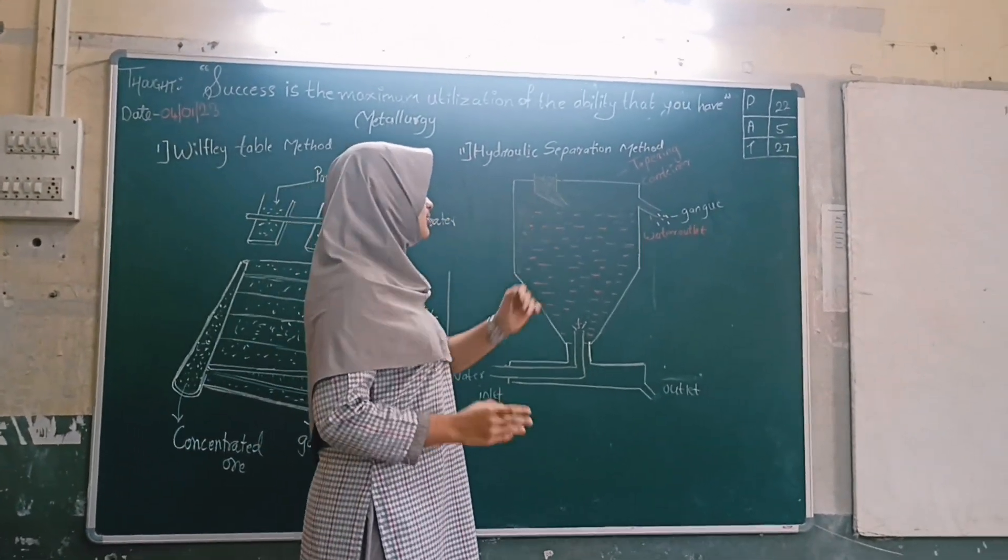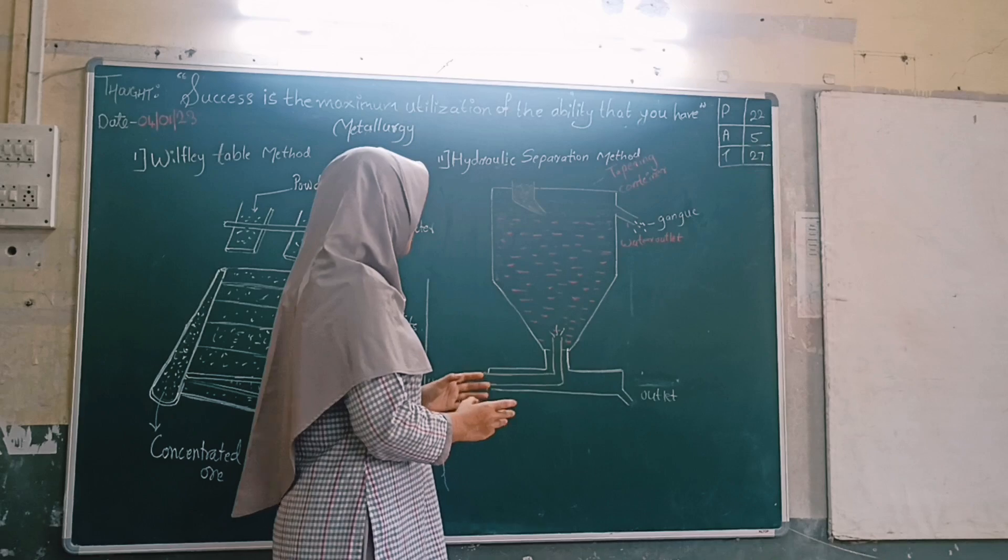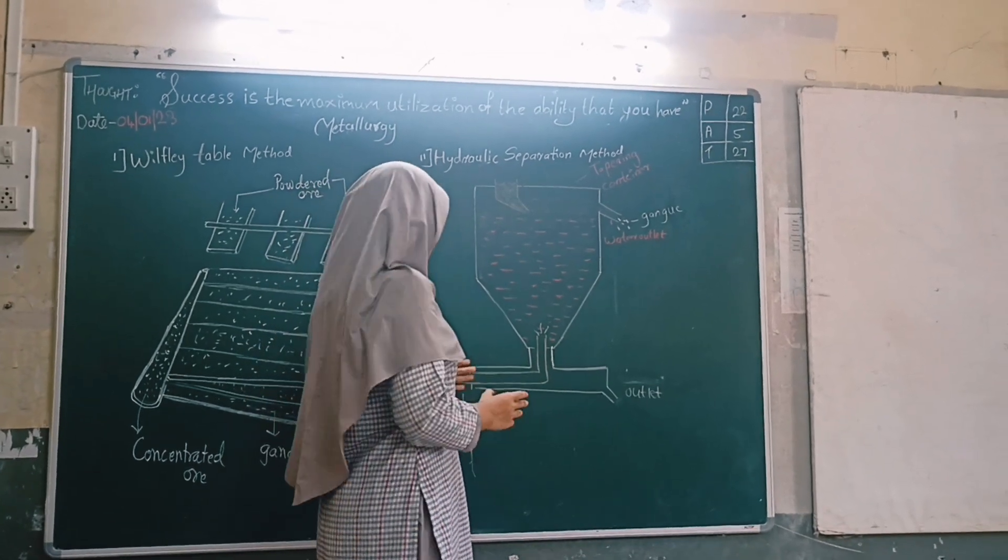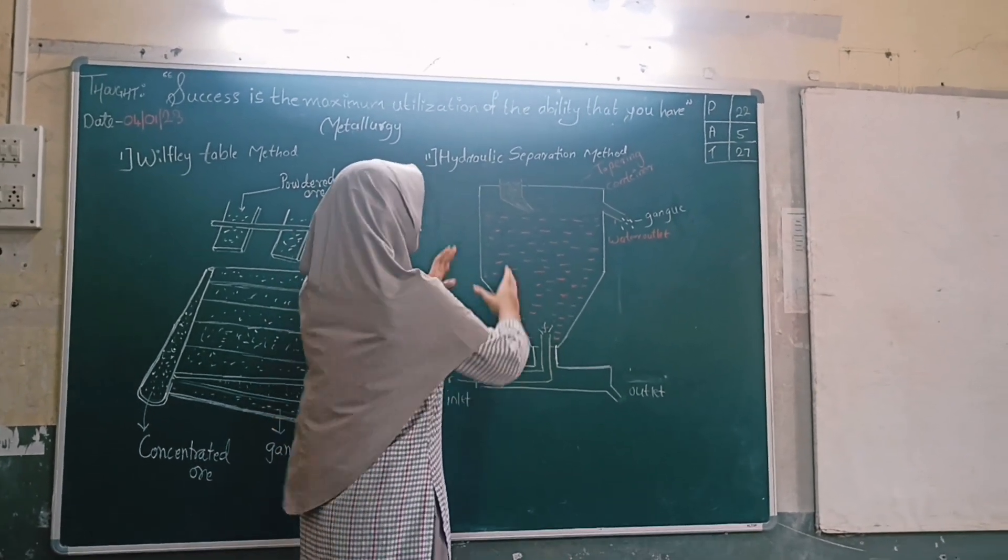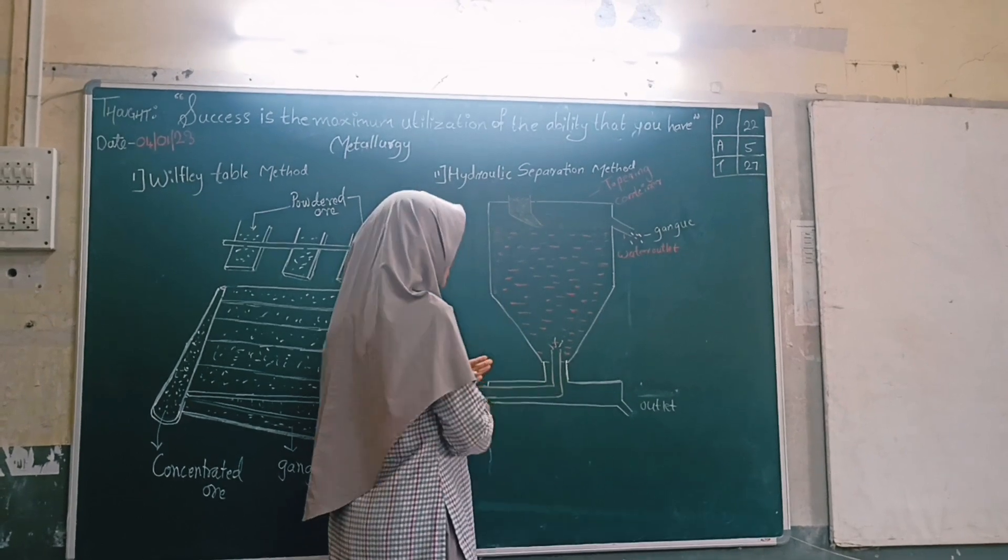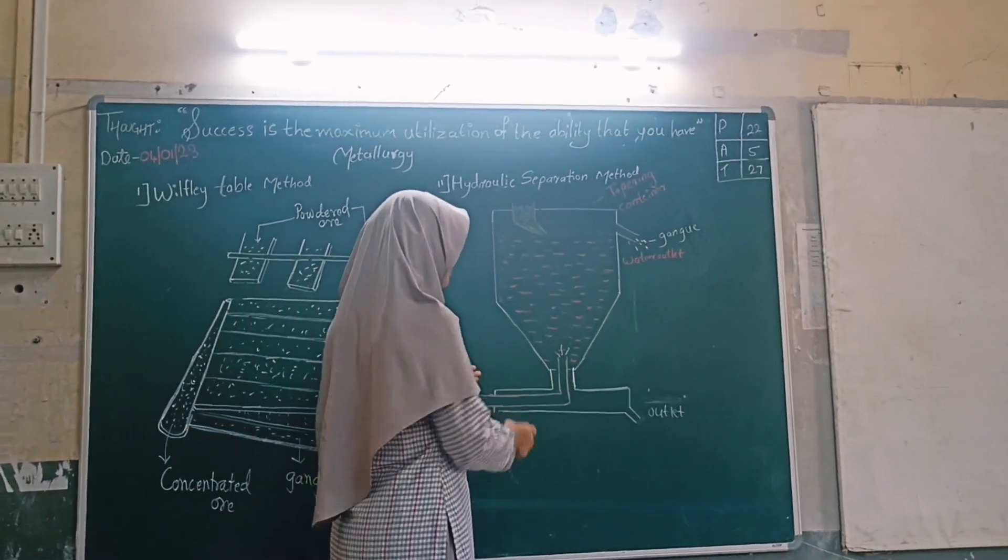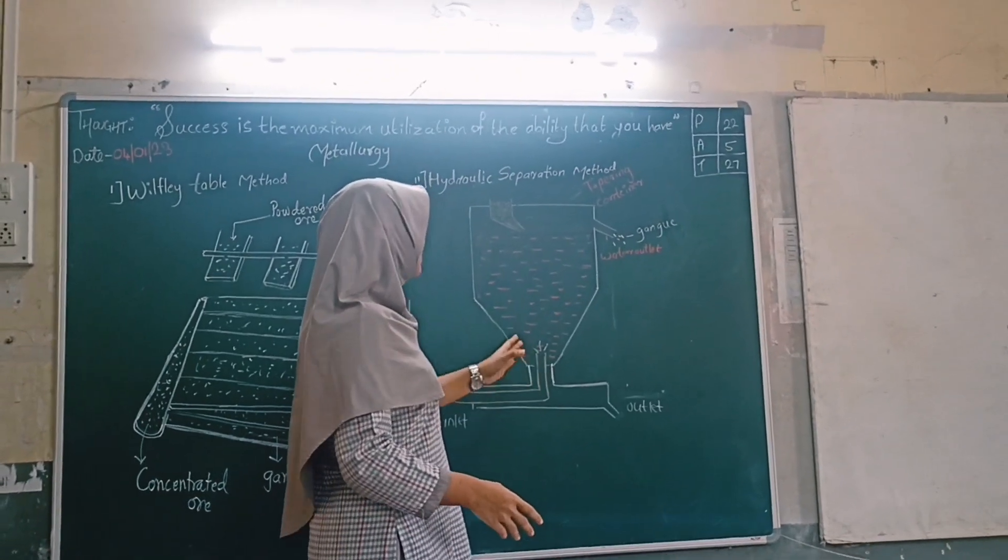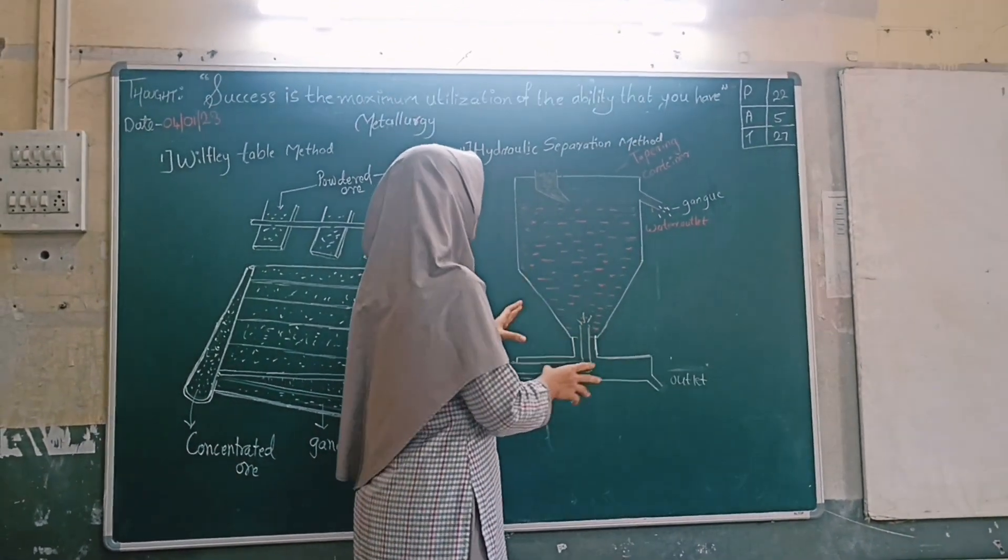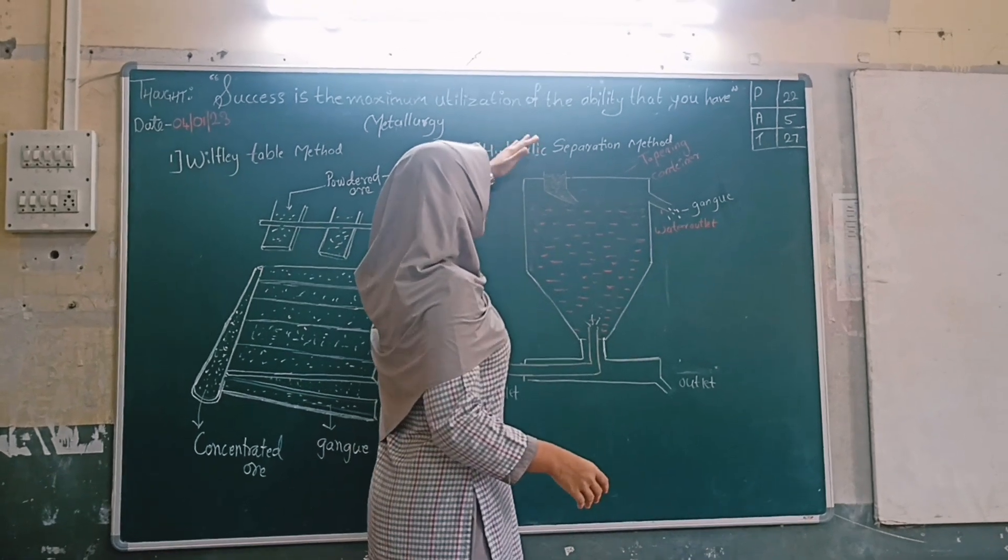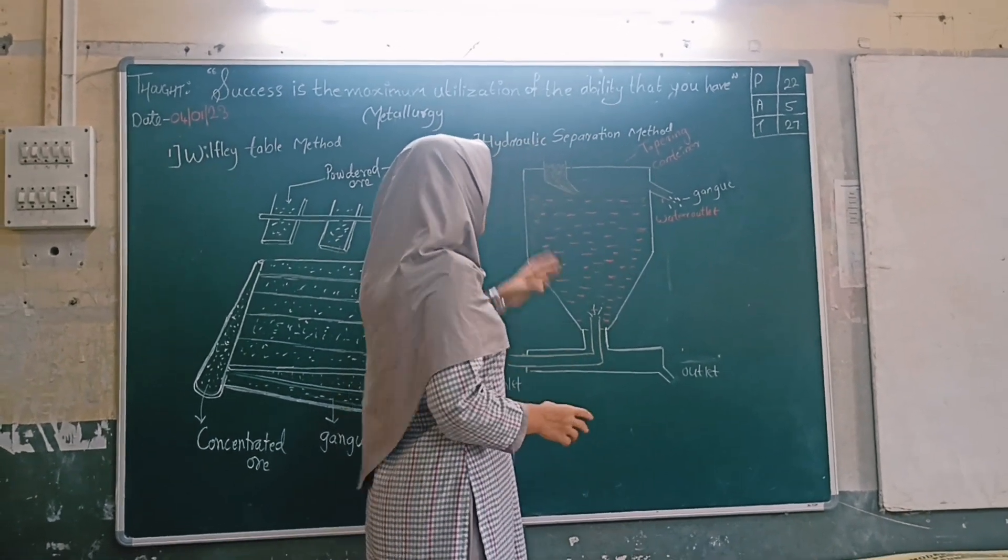The second is pipeline separation. In this also water is used. This is a tapering container and this is a water pipe. From here, a forceful jet of water will enter the container and from here we will put the powder.